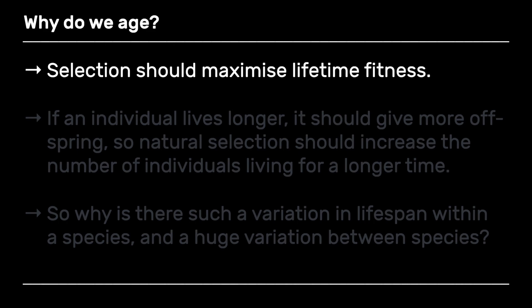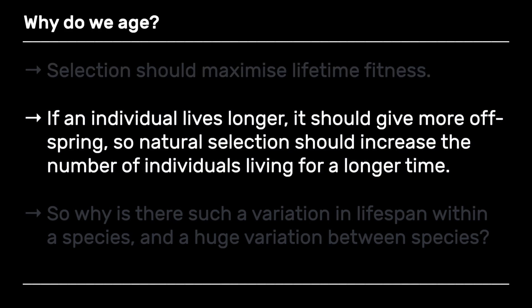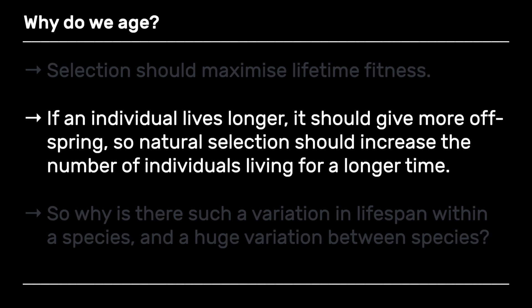Natural selection should maximize lifetime fitness. If an individual lives for longer, it should leave more offspring, and therefore natural selection should increase the number of individuals living for a very long time. So it is perhaps puzzling that we see not only variation between individuals of the same species, but also huge variation between the lifespan of different species.